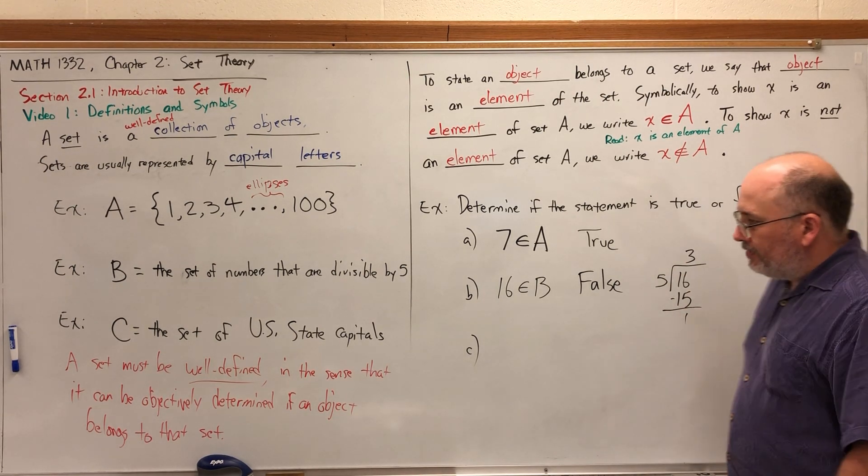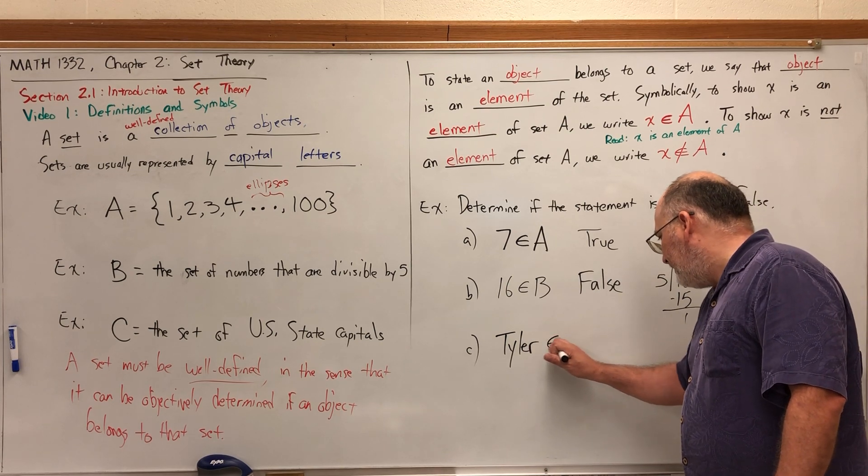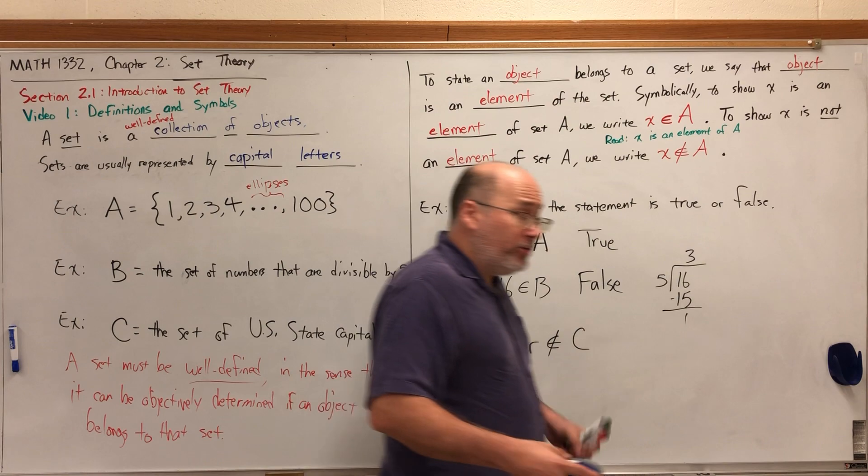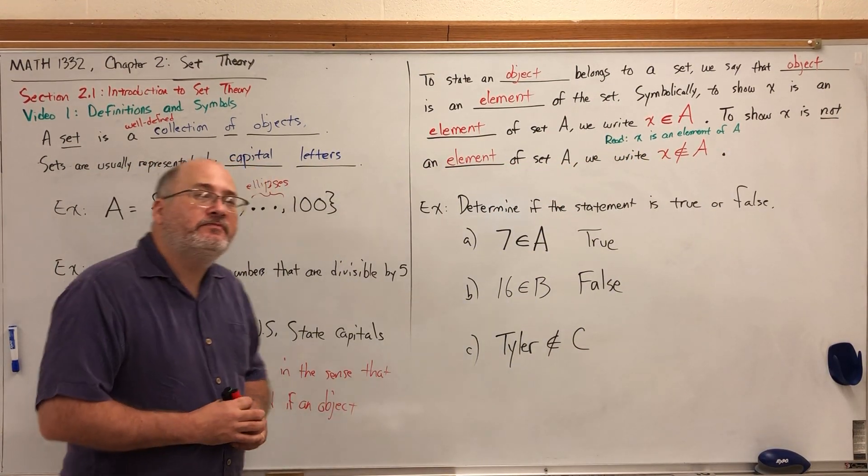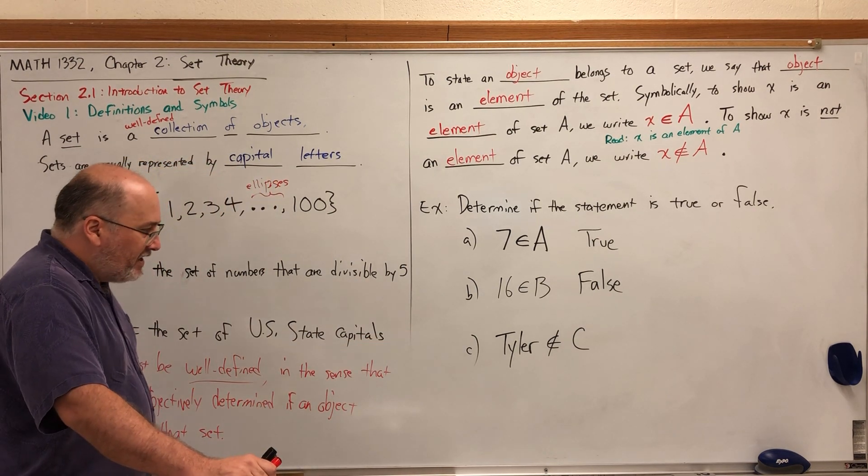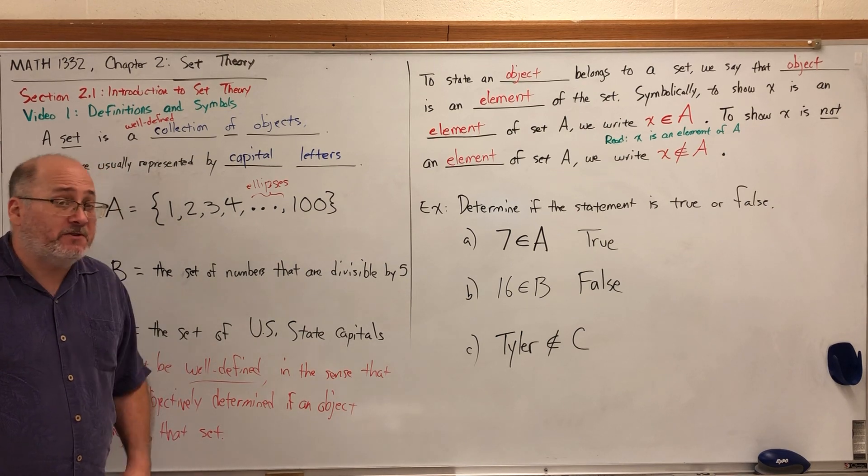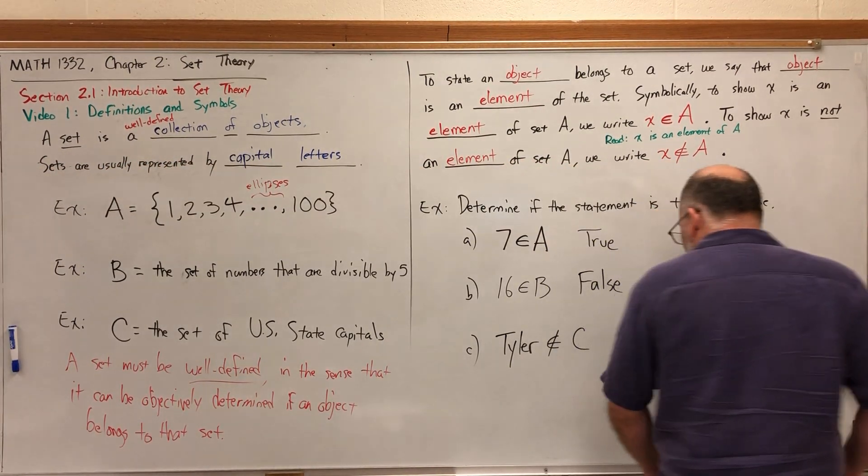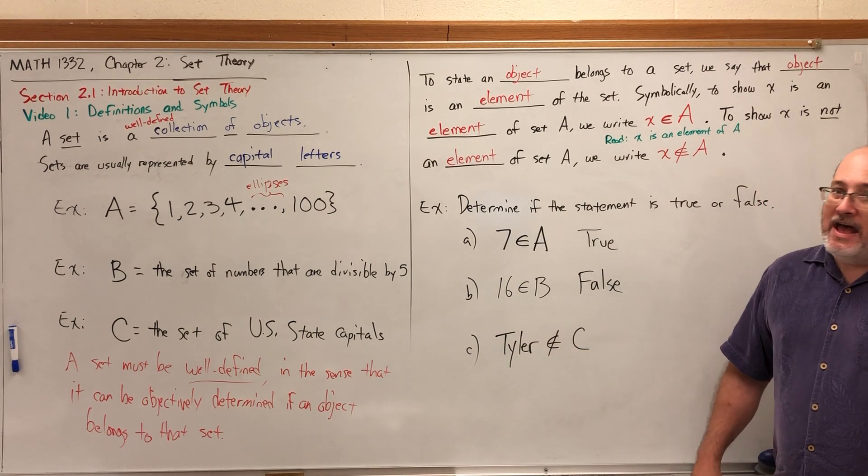For part C, let's look at set C, the set of all US state capitals, and let's say Tyler is not an element of C. Think carefully what this is asking. Is it true or false? First we need to decide whether or not Tyler does belong to the set of US state capitals. I didn't say which state it could be, but I know it's not a US state capital. You can check the list of all 50 state capitals and none of them say Tyler. This sentence says Tyler is not a state capital, and that sentence is true.